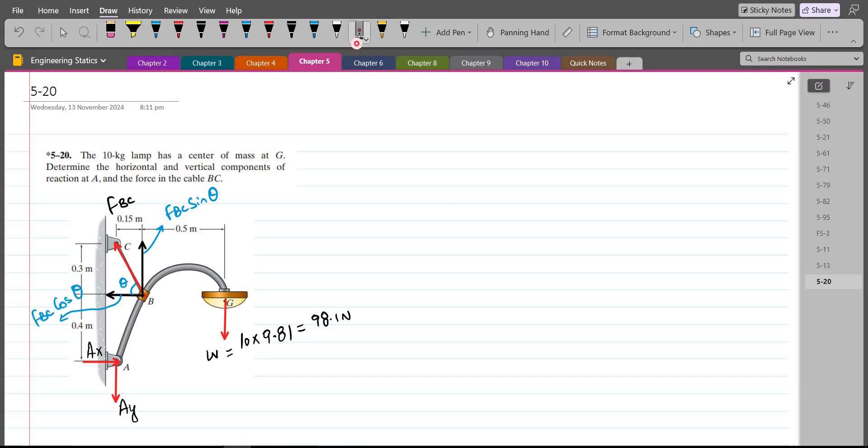To find the value of theta, we can consider this triangle, which has a height of 0.3 meters and it has a base of 0.15 meters and this right here is the angle theta. So tan theta equals to 0.3 divided by 0.15. So theta is equal to 63.43 degrees.